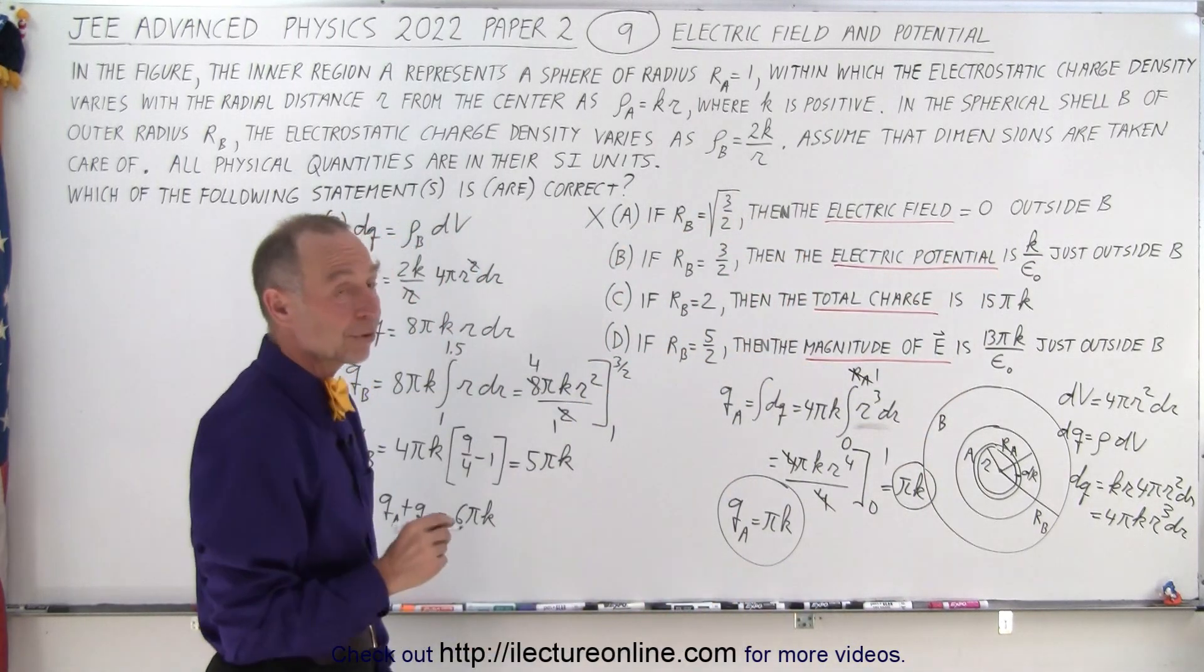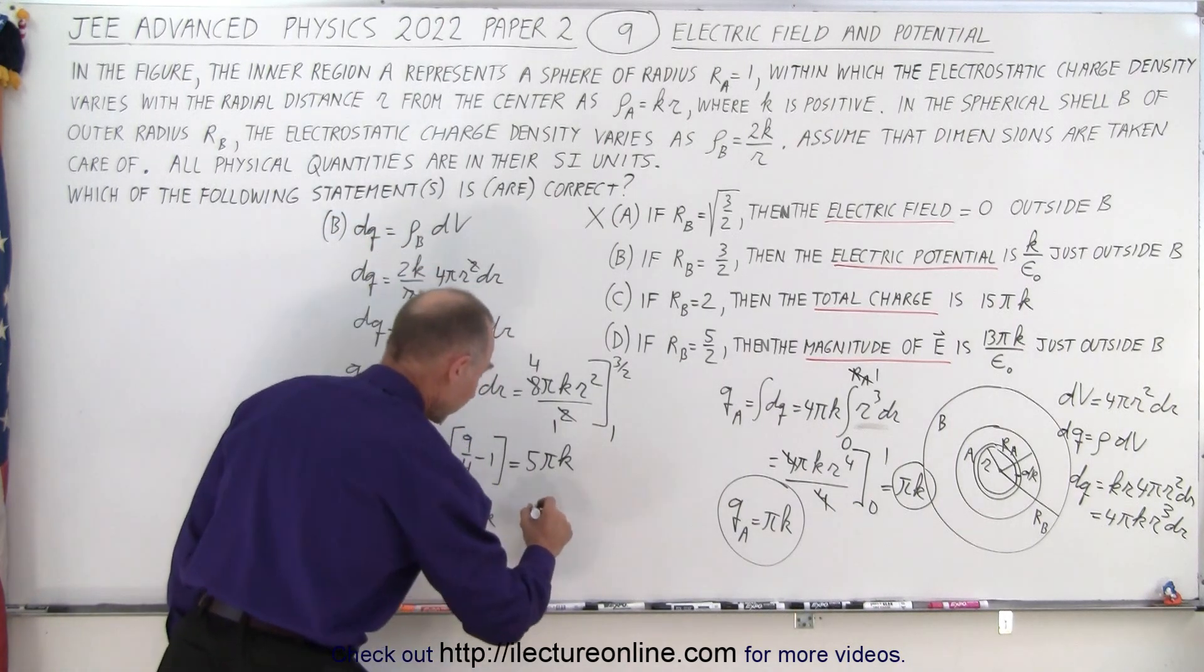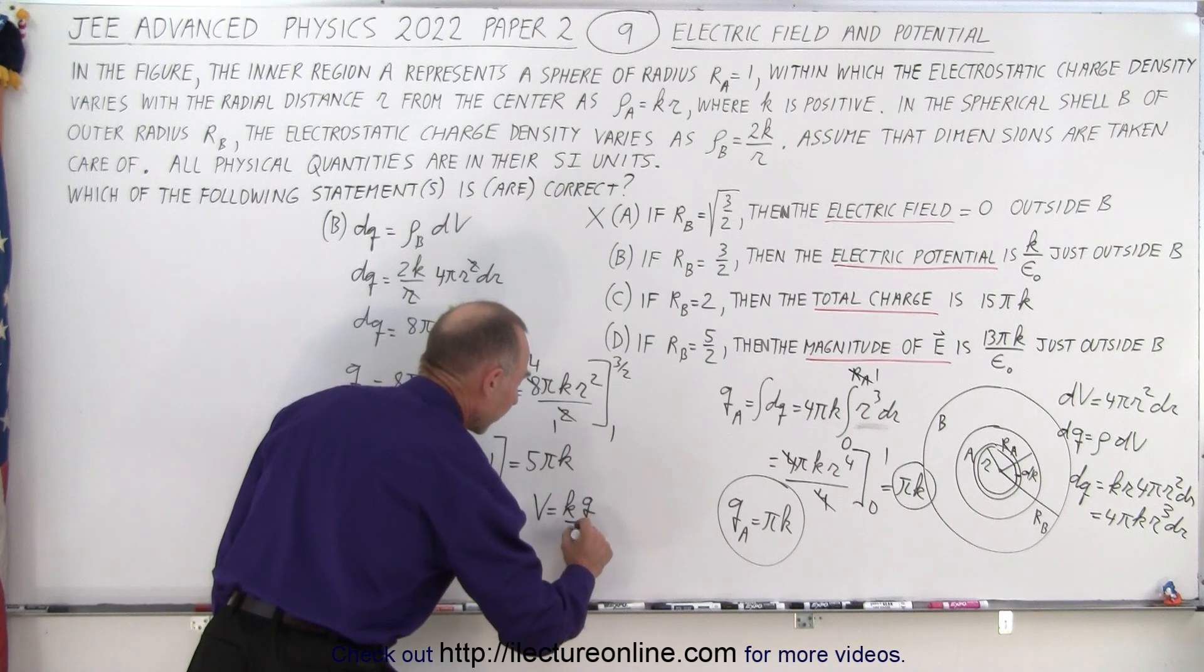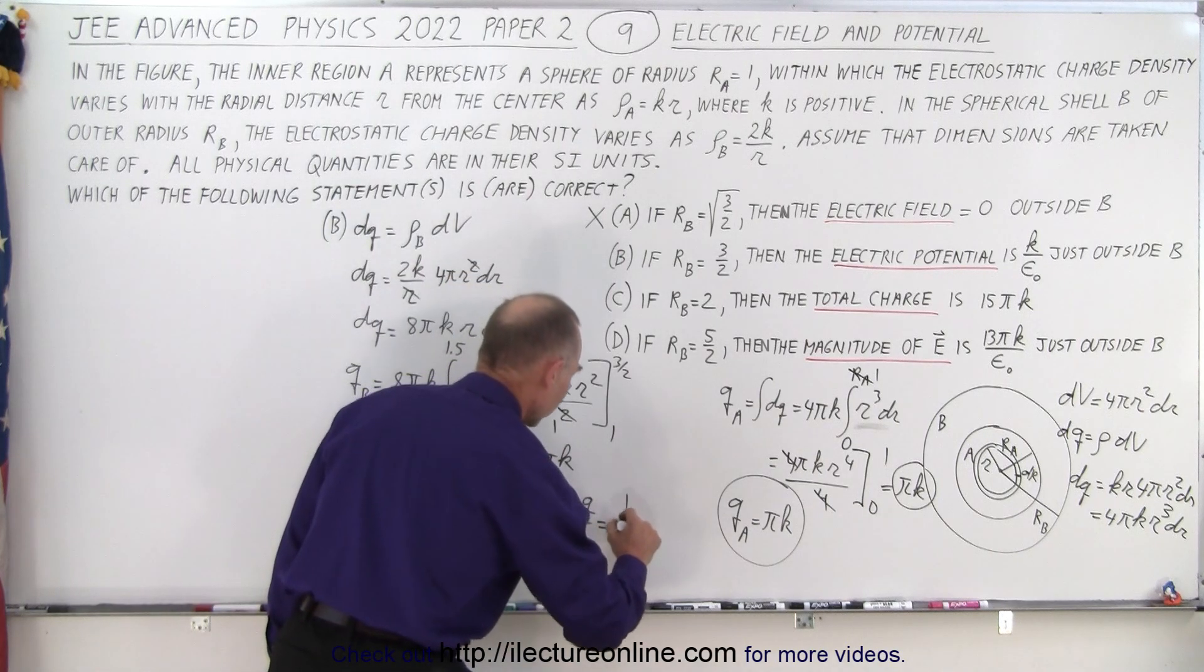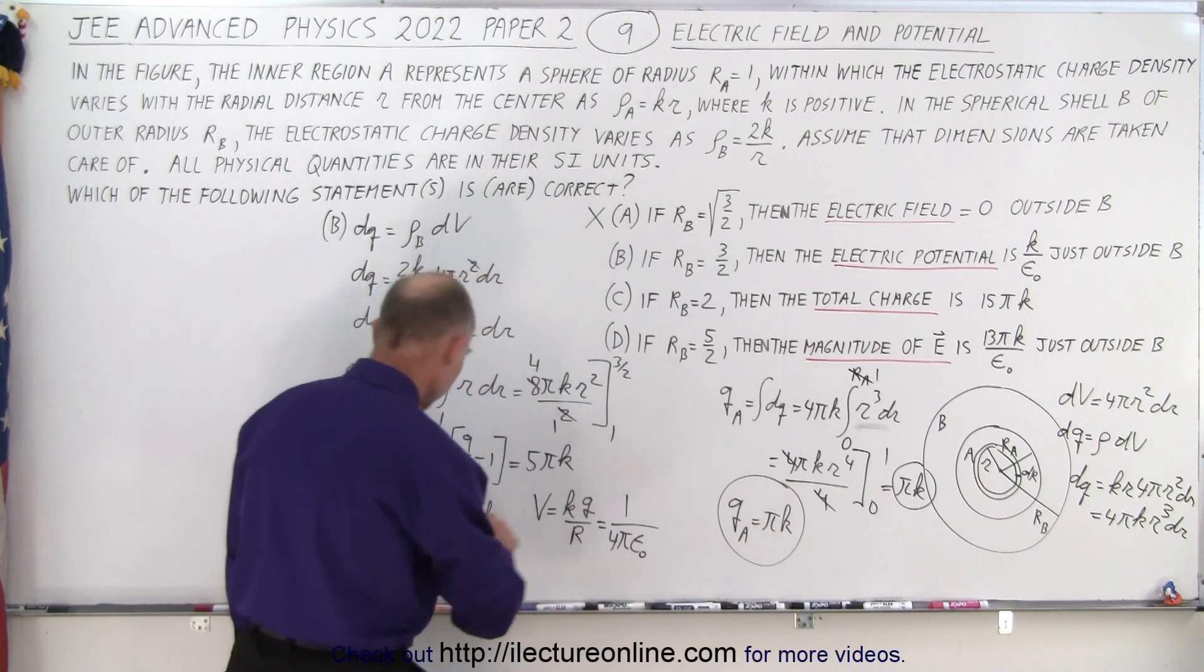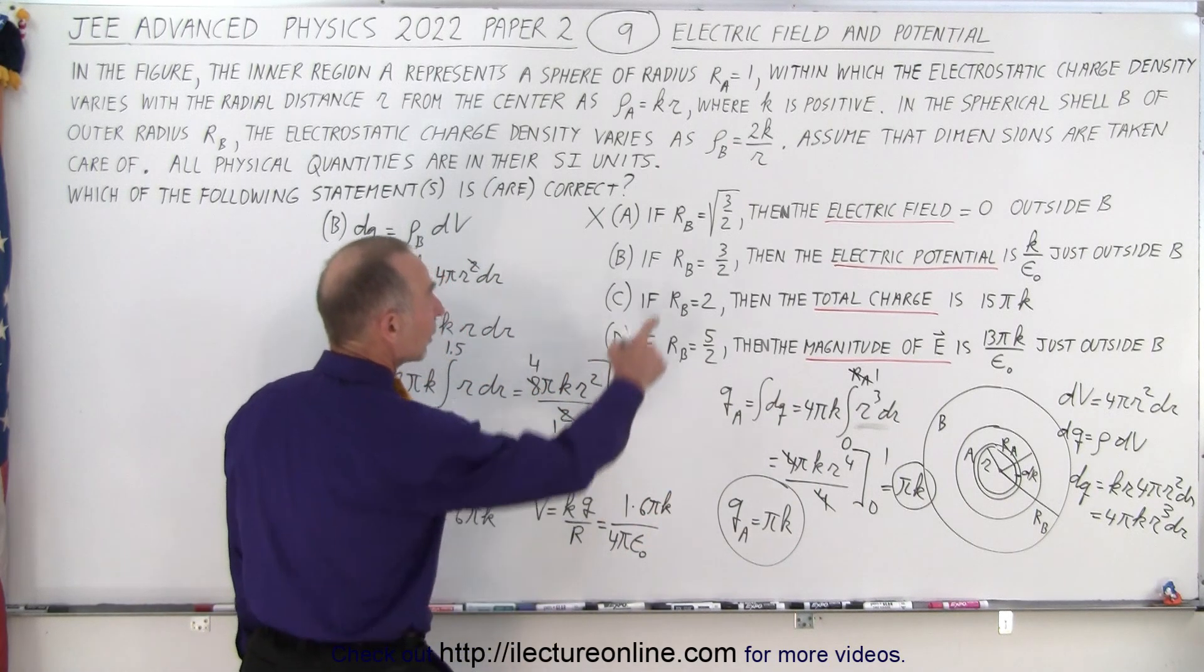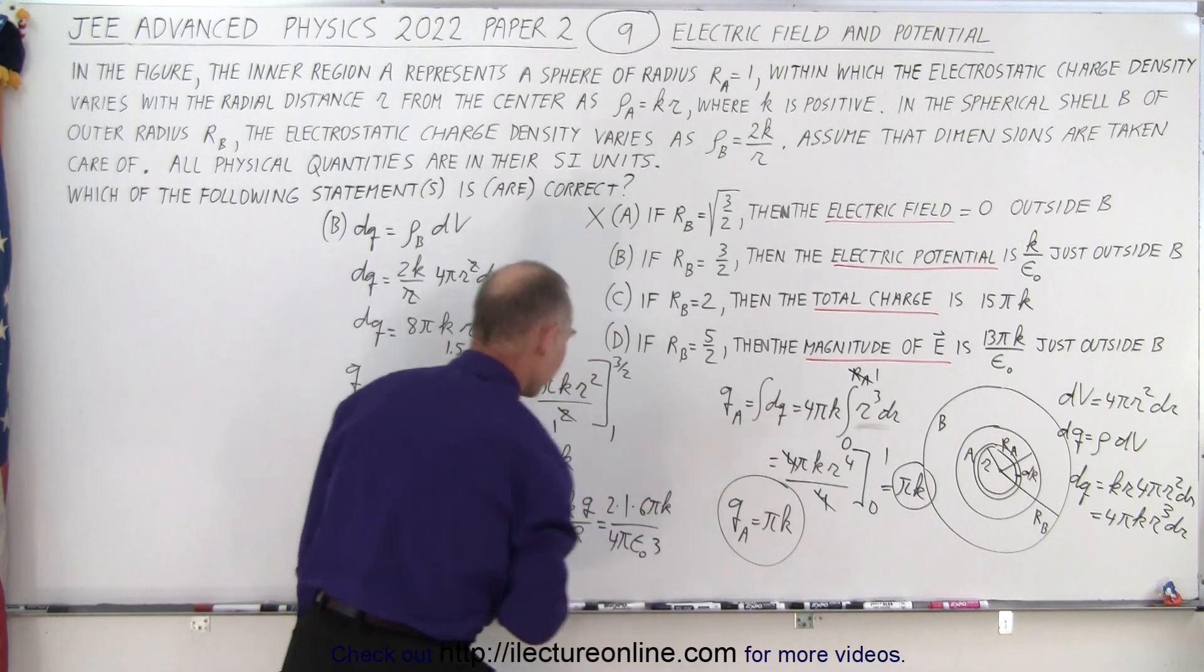Now what would be the electrical potential just outside B? Is it k over epsilon sub not? Well, we know that the potential V is equal to k times q over r. And k of course is 1 over 4 pi epsilon sub not, so that would be 1 over 4 pi epsilon sub not, q is 6 pi k, and the radius would be 3 over 2. 3 over 2, so the 2 goes to the top.